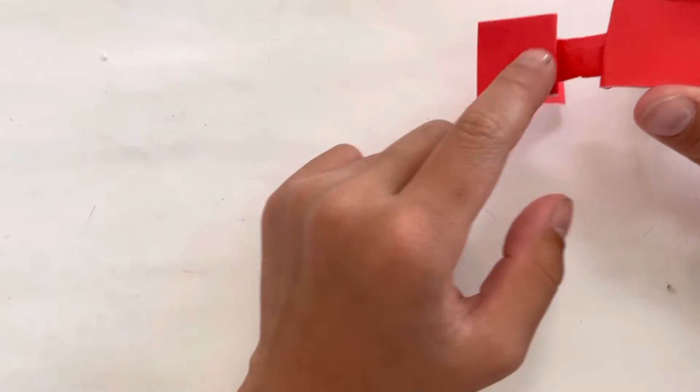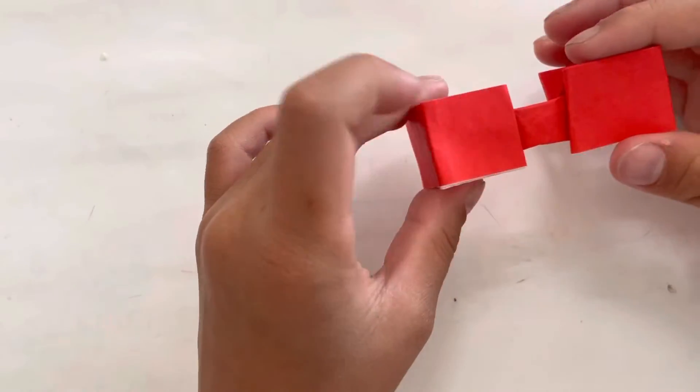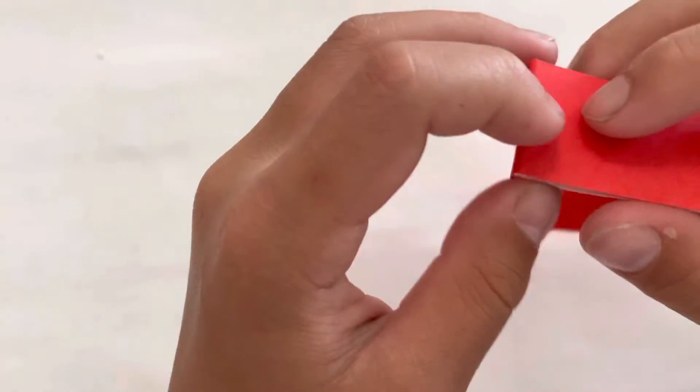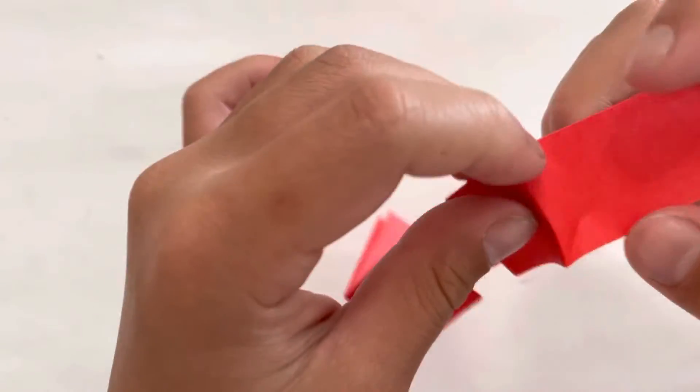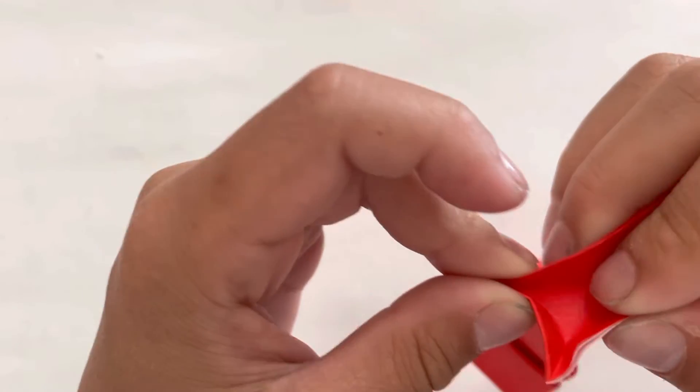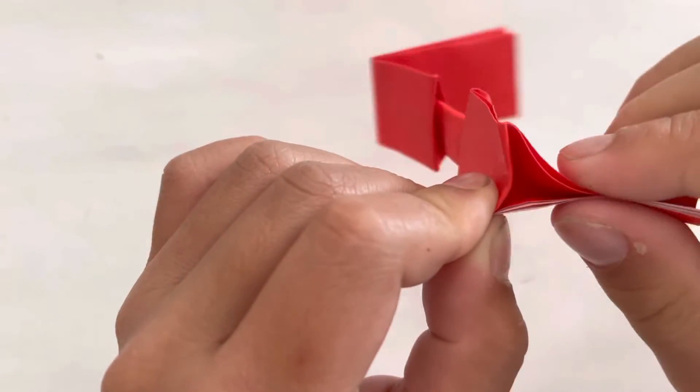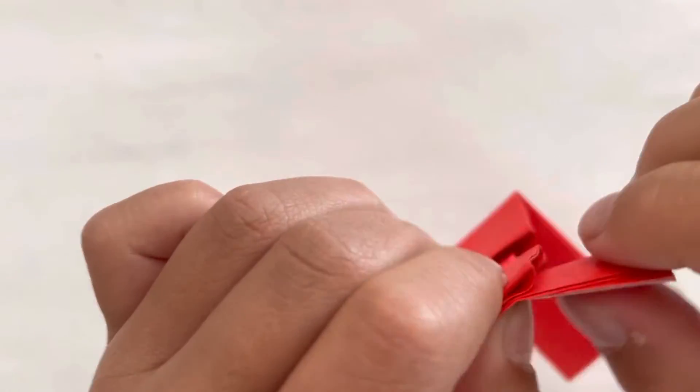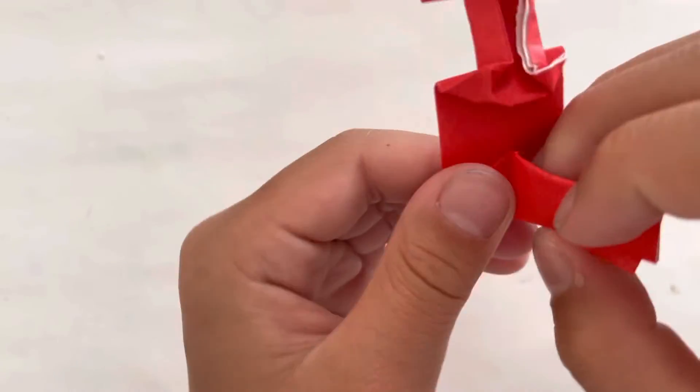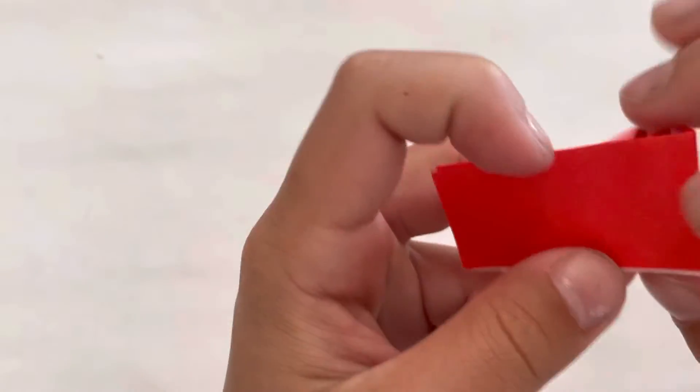So these will be, these are the lenses. And then this will be the things that go on the ear. So to make that, you first rabbit ear. Like this. This way and this way. And do the same on that side.